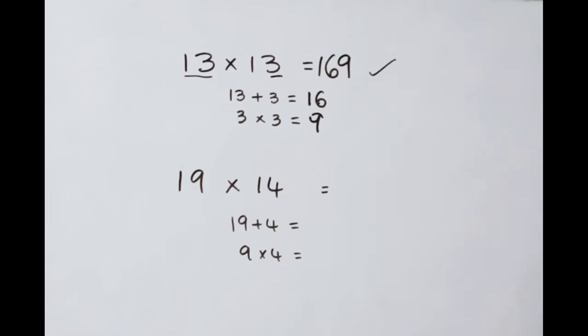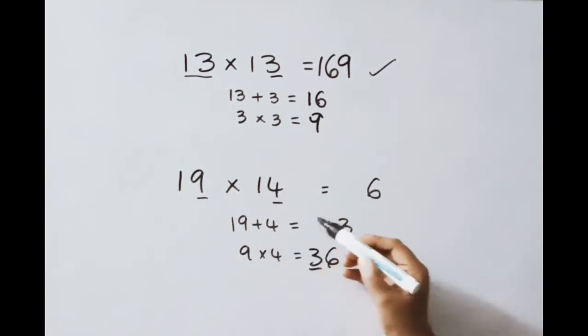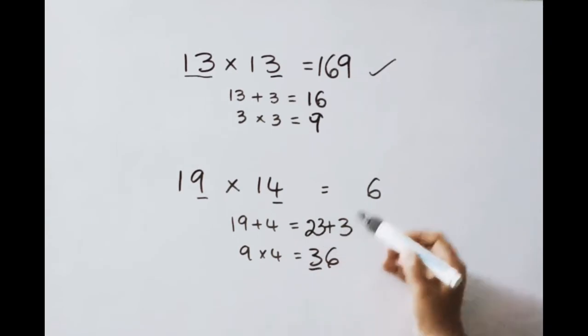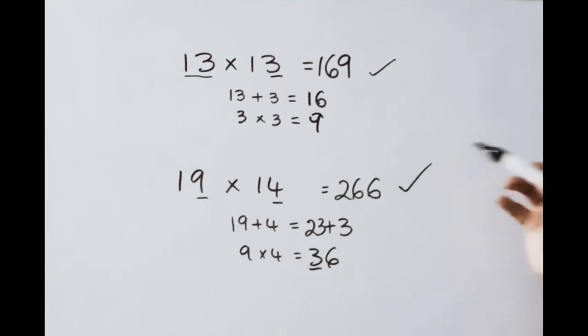See next one. 19 into 14. Multiply units place value. 9 4's are 36. Write down 6. And 3's carry here. Now add 19 plus units place value 4. 19 plus 4, 23. 23 plus 3, 26. 19, 14's are 266 is the answer.